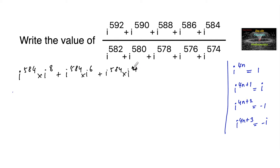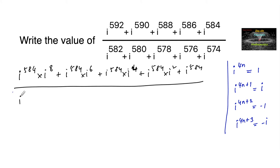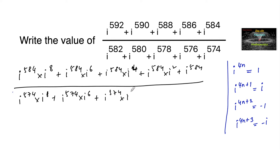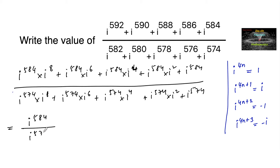Continuing the numerator: plus i to the power of 584 times i to the power of 2, plus i to the power of 584. Similarly in the denominator, the smallest number is 574, so we take i to the power of 574 as common: i to the power of 574 times i to the power of 8, plus i to the power of 574 times i to the power of 6, plus i to the power of 574 times i to the power of 4, plus i to the power of 574 times i to the power of 2, plus i to the power of 574.